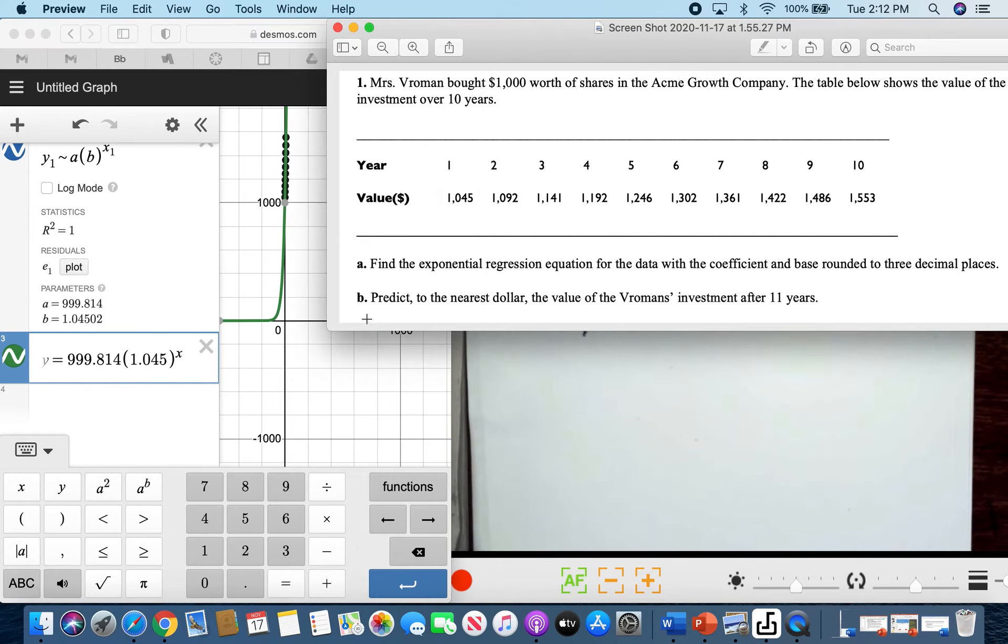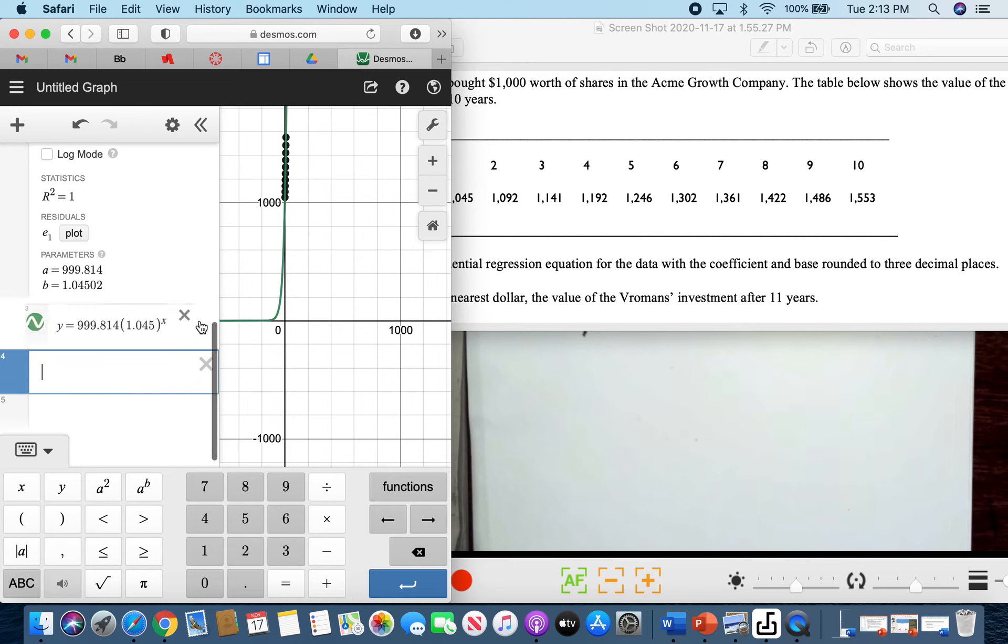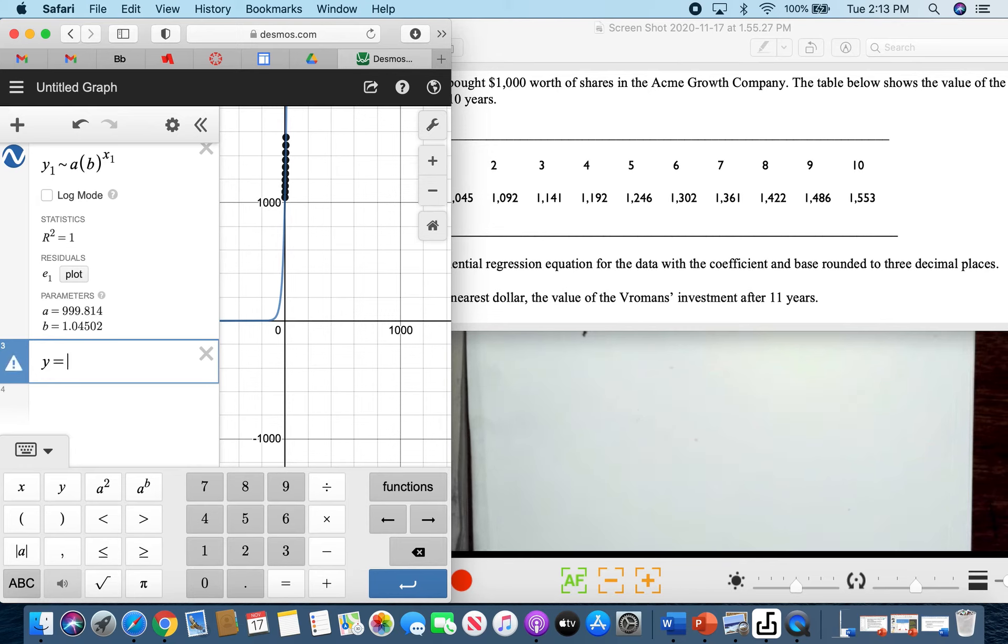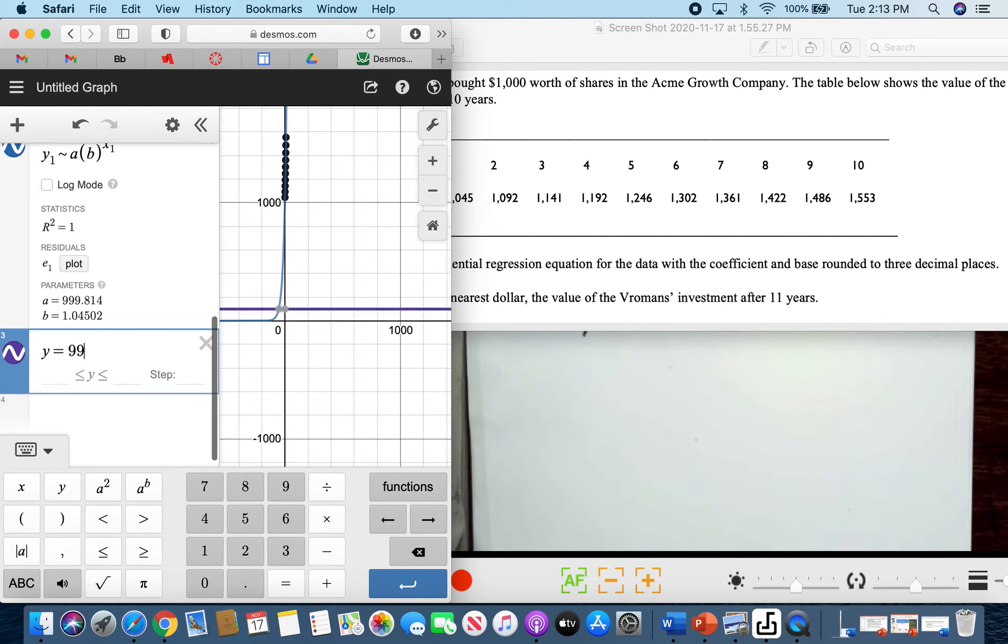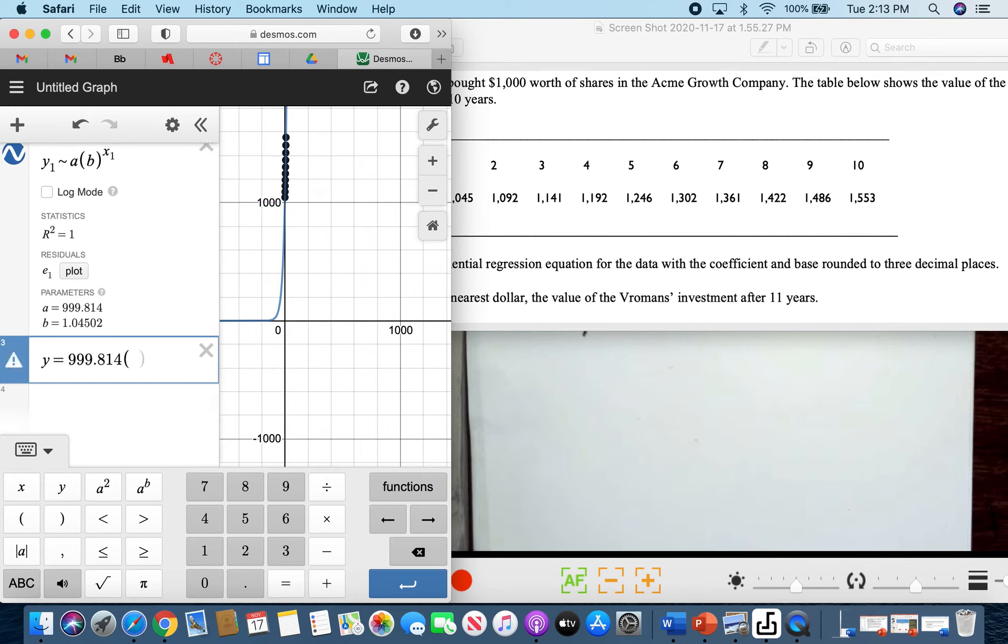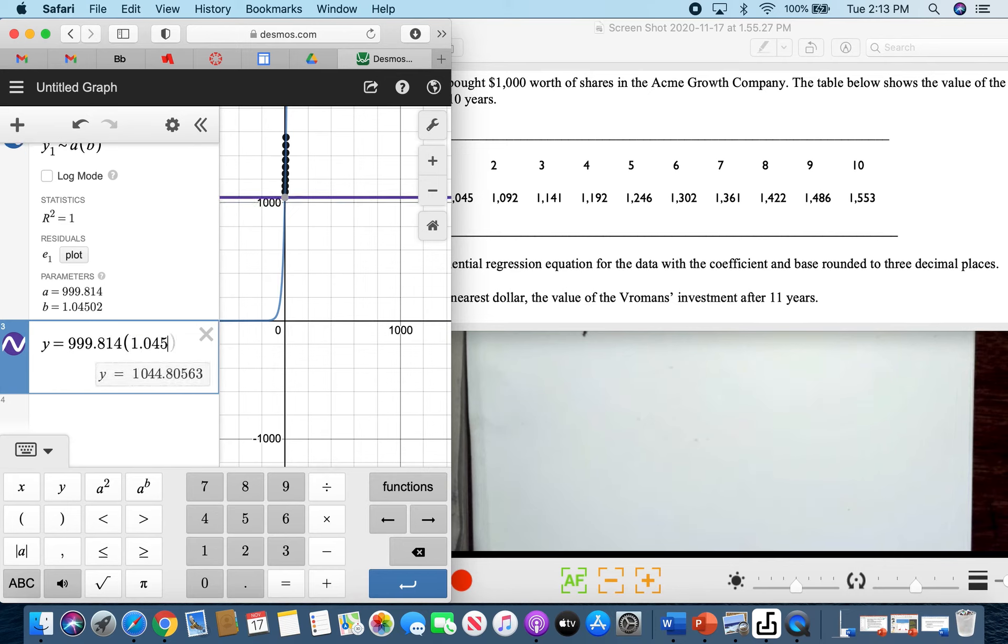We are now solving the last question of the problem. You're asked to predict to the nearest dollar the value of Broman's investment after 11 years. So our X is 11. All we have to do is copy this and change our X to 11. So 999.814 times 1.045, and our X now is 11.